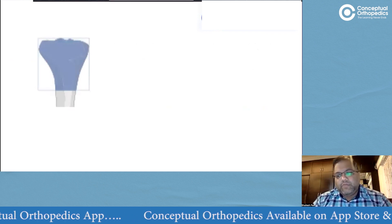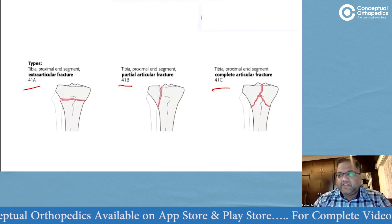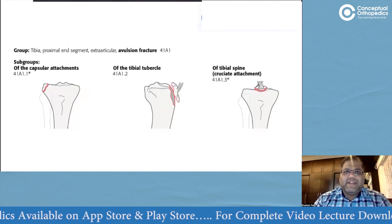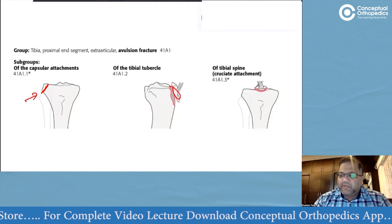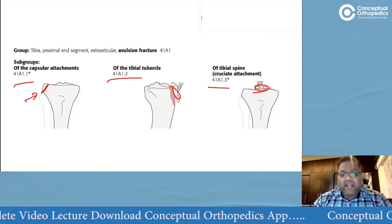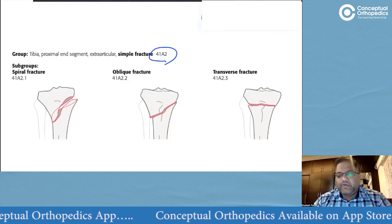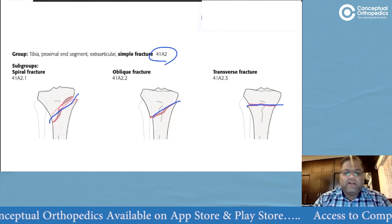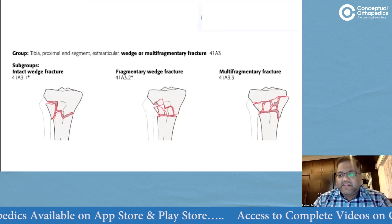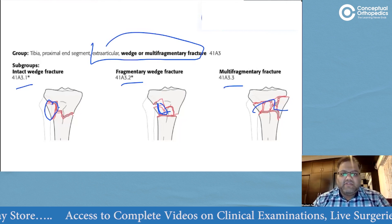Moving on to the proximal tibia: the newer classification is very similar to the generic AO system but has also incorporated the Schatzker classification, which has nearly become the gold standard. Type A is extraarticular: A1 covers avulsion injuries such as capsular attachment, tibial tubercle, or tibial spine fractures. A2 is extraarticular simple (spiral A2.1, oblique A2.2, transverse A2.3), and A3 is extraarticular wedge or multifragmentary (A3.1, A3.2, A3.3) — mirroring the distal femur classification.